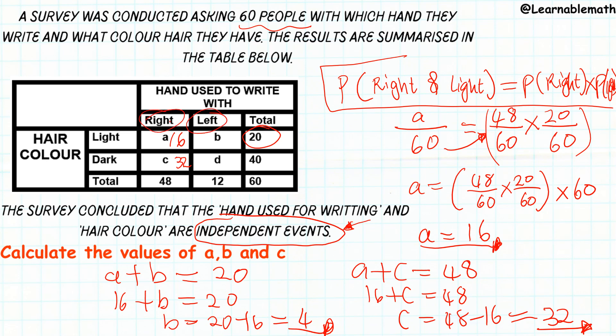In this contingency table we have two events for writing — right or left hand — and two events for hair color — light or dark. You choose one from each to apply the independence formula. I chose right hand and light hair, but you could choose any combination such as left and dark, and you will still get the same answer. I hope you find this helpful.